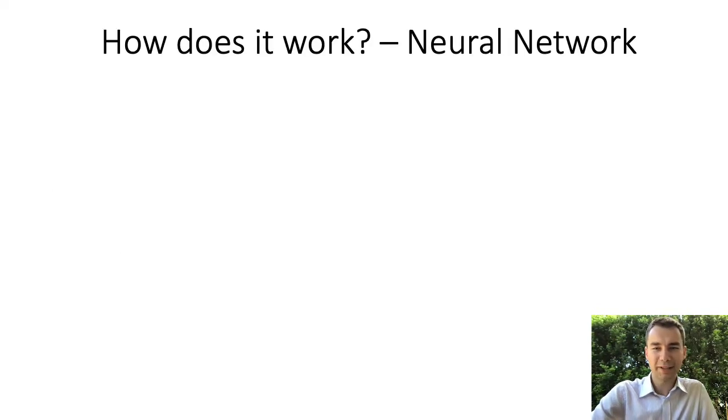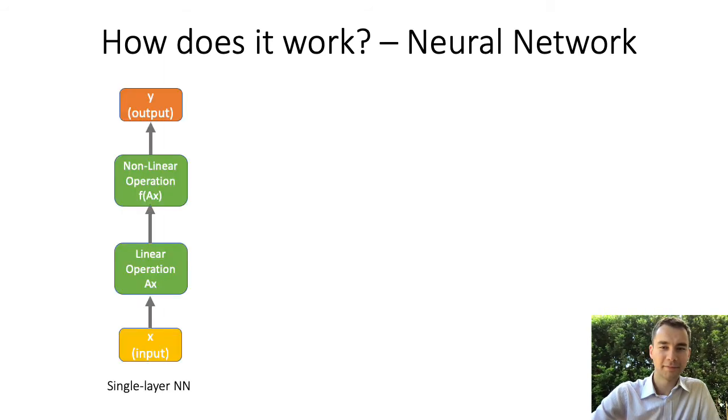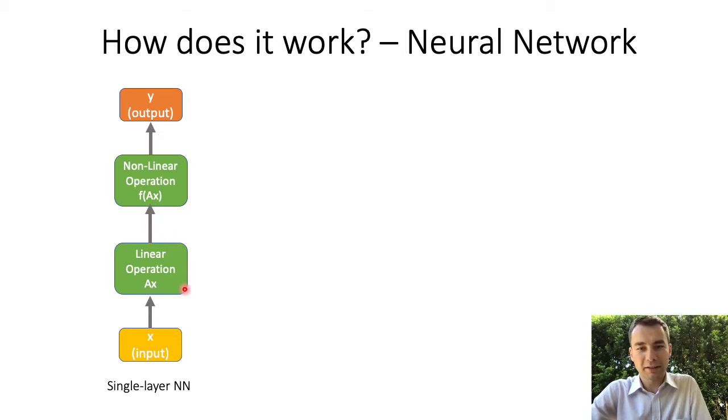So how does it work? A simplest single layer network is a mathematical function which applies two operations to its input. First a linear operation. You can understand this operation as a matrix multiplication.